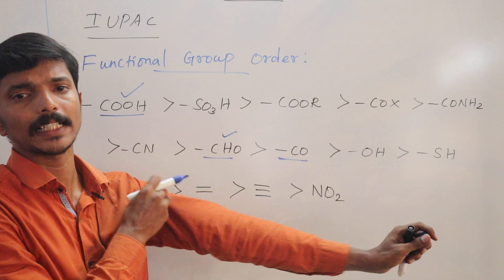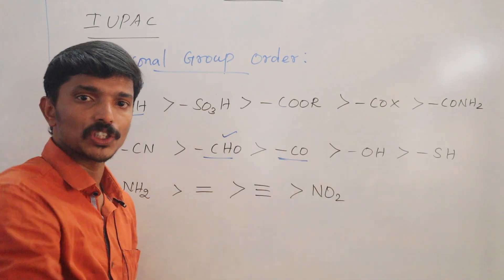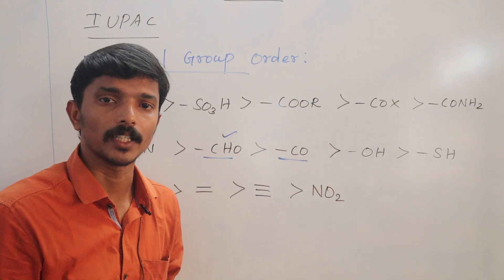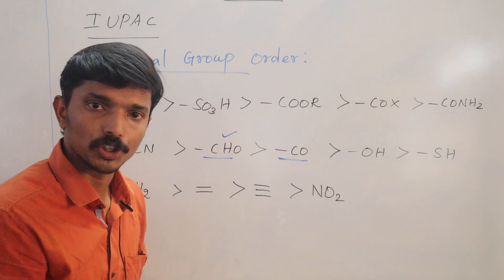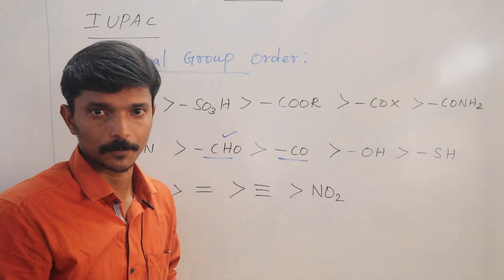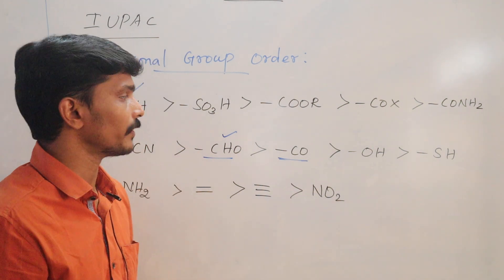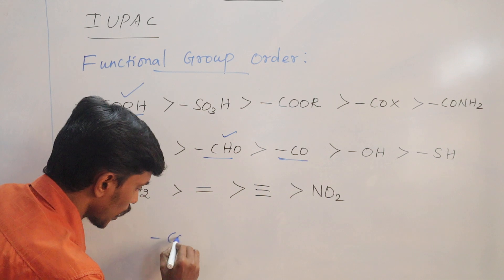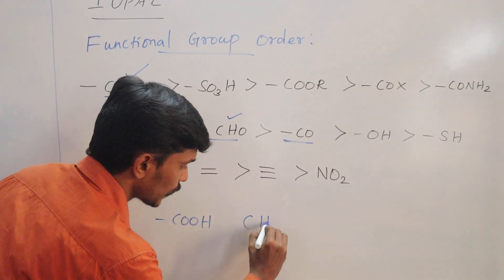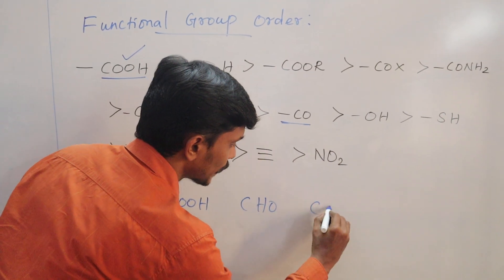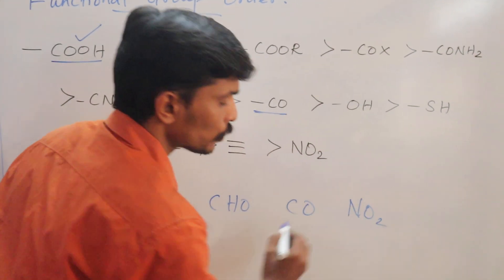So if you understand this concept, priority-order based questions will involve changes in naming. What you need to know: Carboxylic acid, Aldehyde, Ketone, and also NO2 — you need to arrange them in increasing or decreasing order of priority.